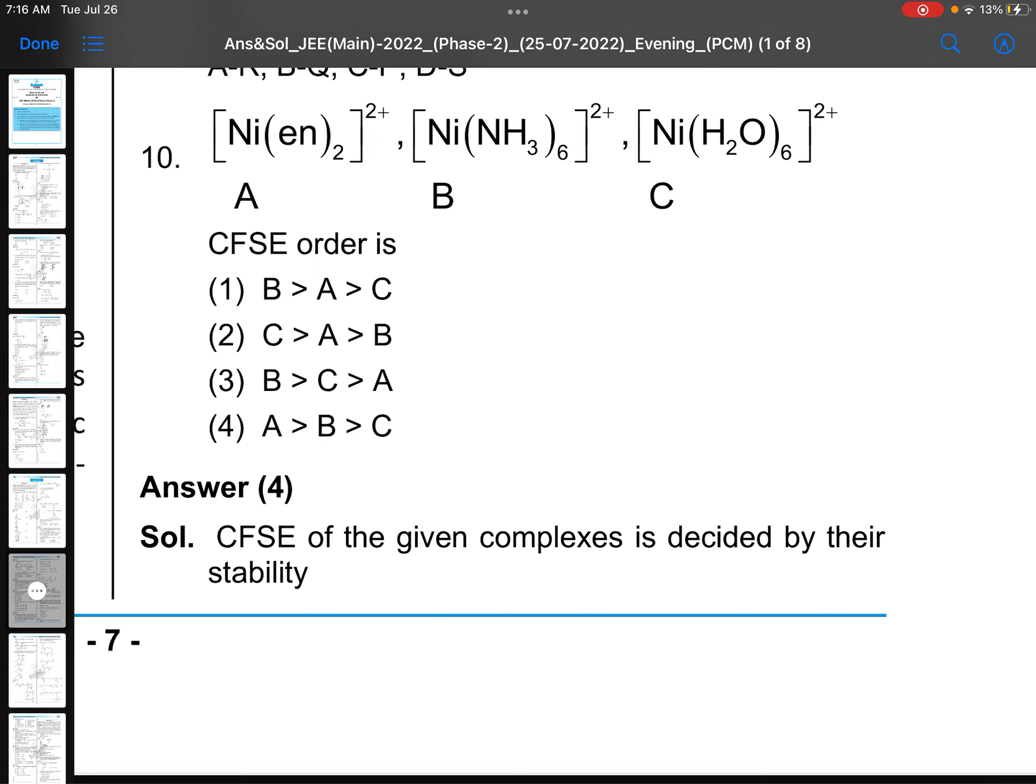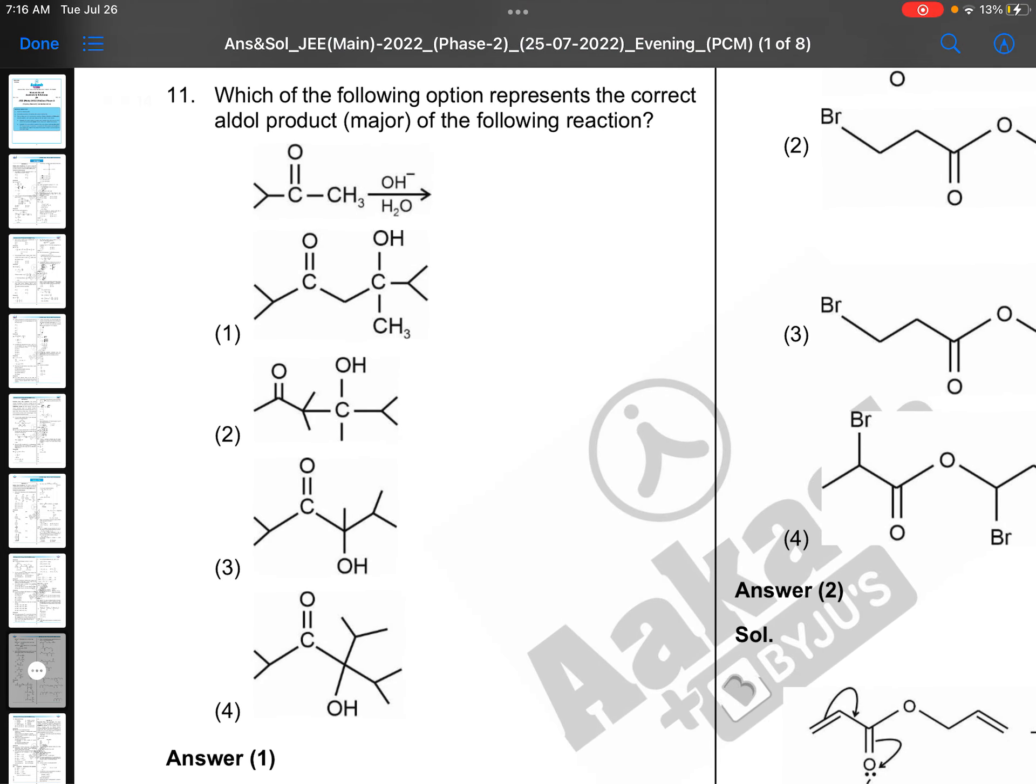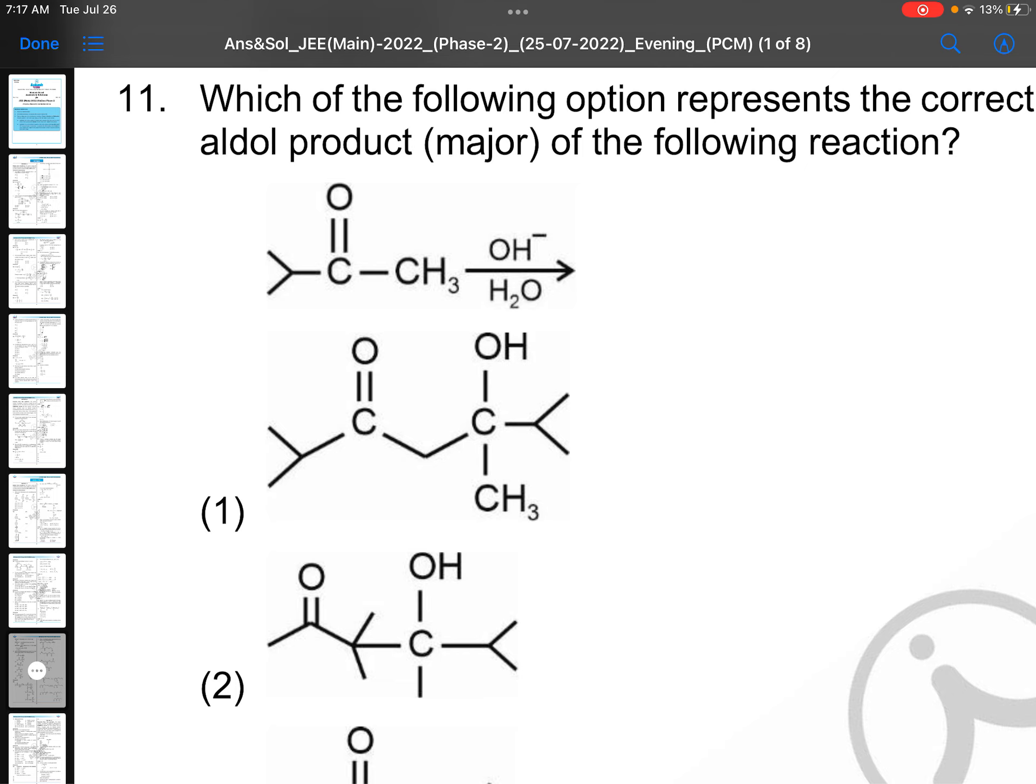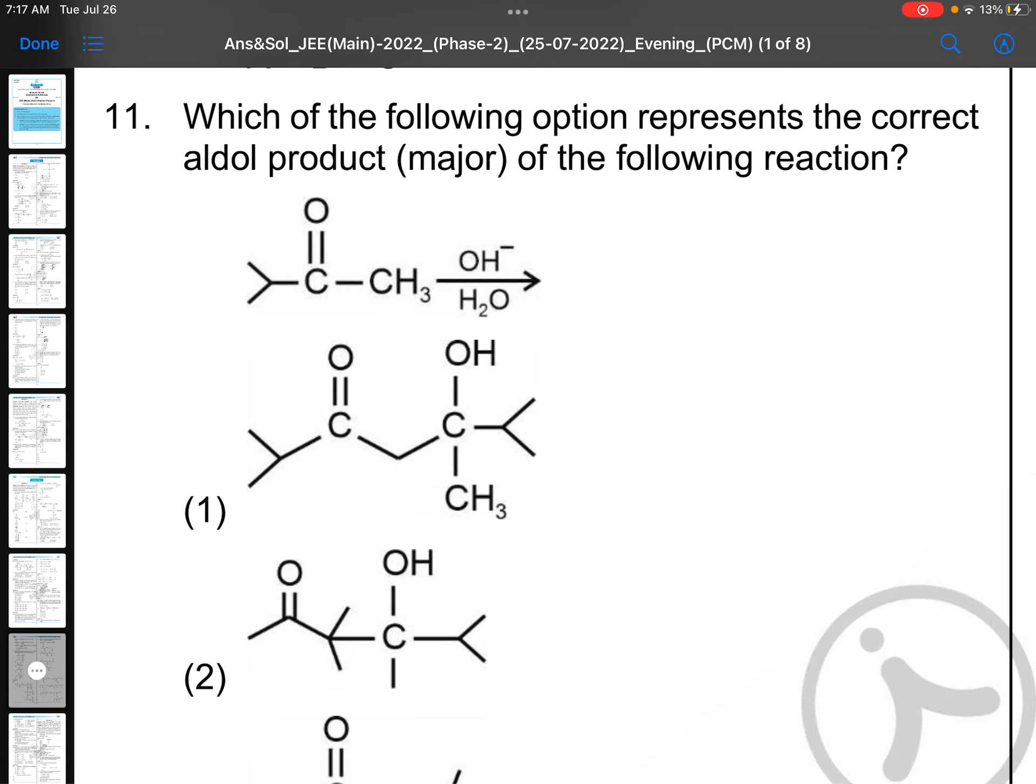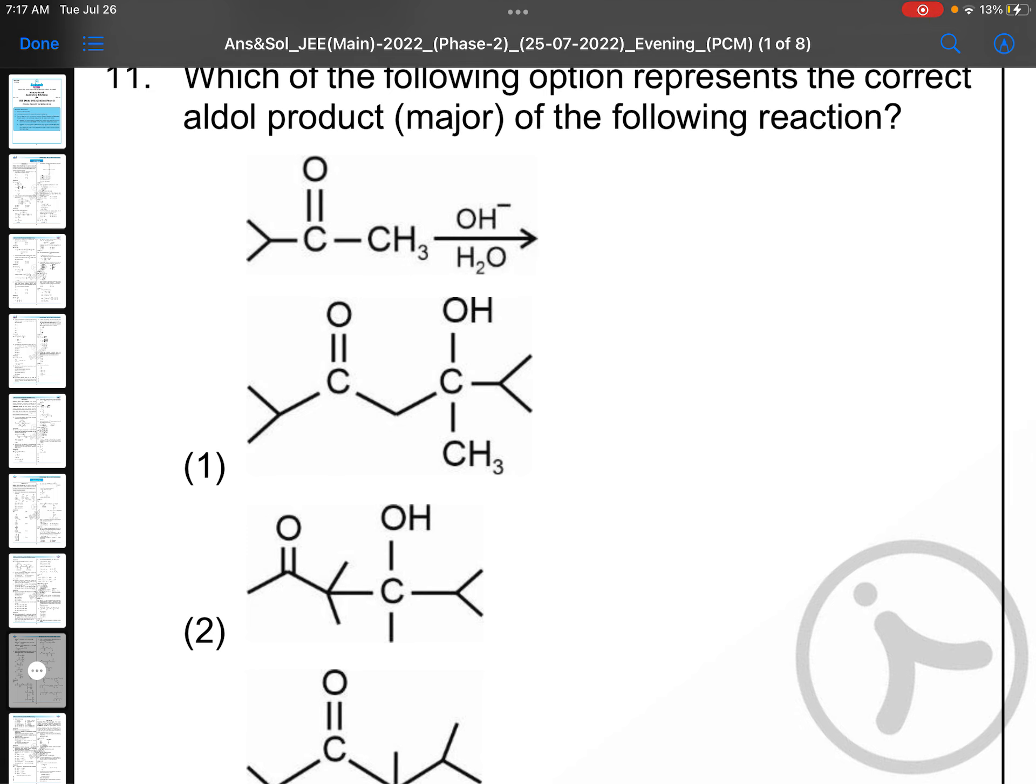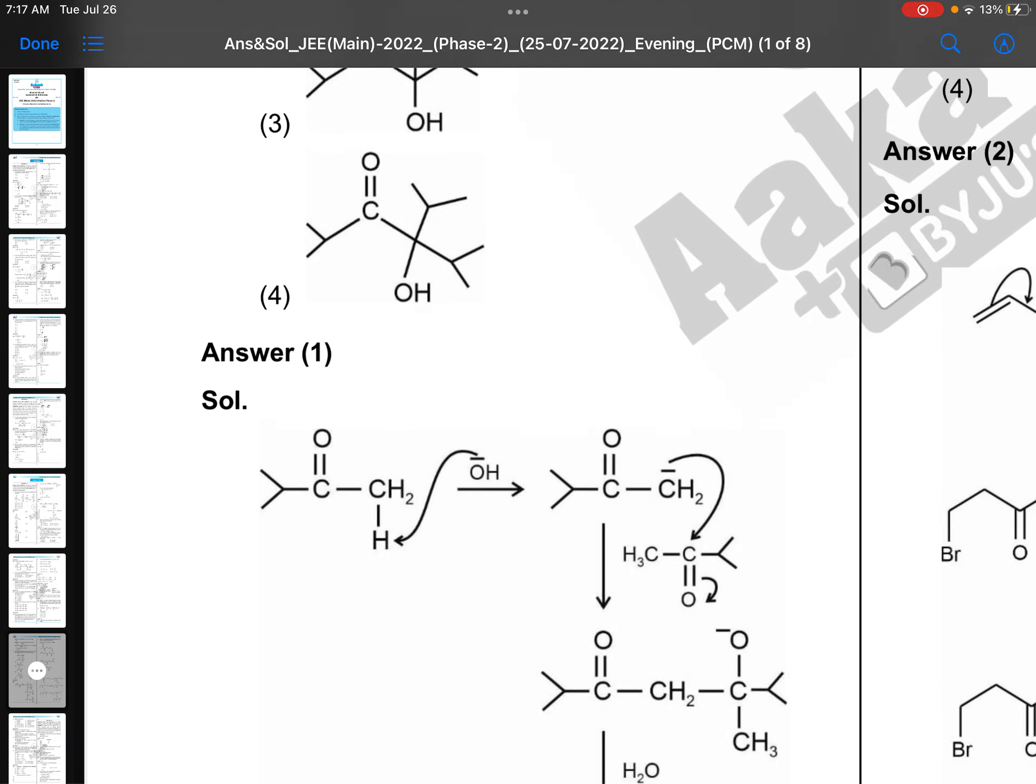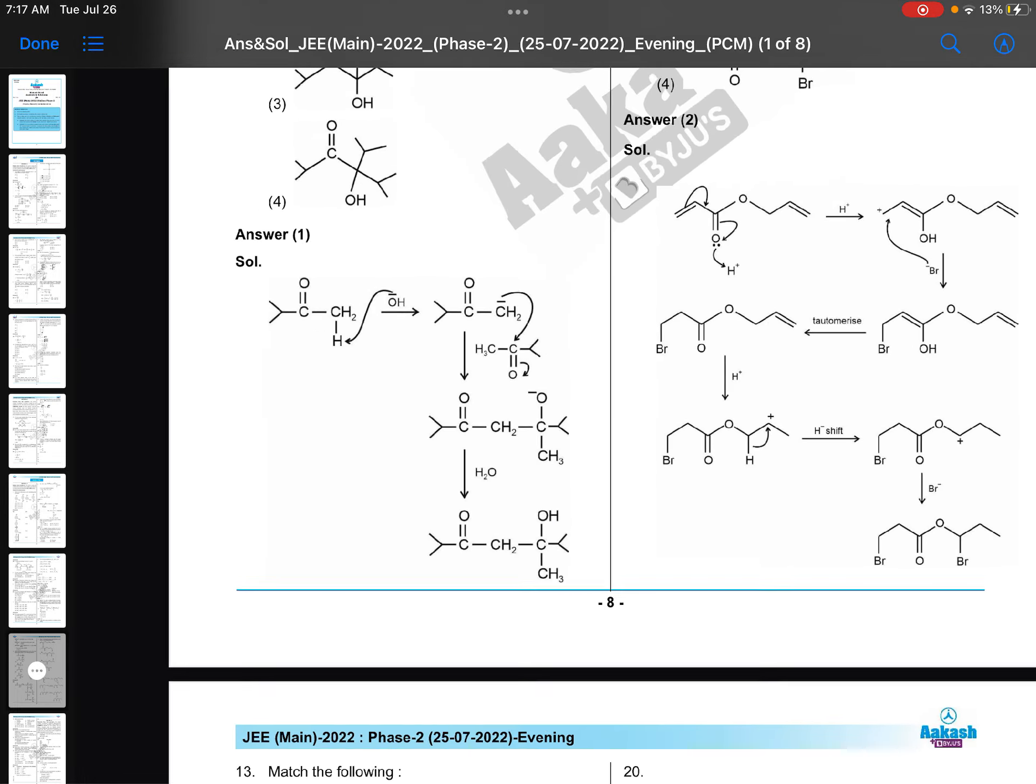Which of the following option represents the correct aldol product? This is a very good question actually. Both sides there is an alpha hydrogen, so you need to check the alpha hydrogen from where it can be gone, carbonion formation, then you need to take all these structures. It is time taking but option one will come. You know aldol products how to write, that is easy job, but here you need some time because when both sides groups are there and four options are given, you need to check very carefully. This is the solution. OH minus is taking the proton, CH2 minus carbonion is formed, that is attacking another molecule, that is converted to OH. Aldol condensation questions are very regular questions.